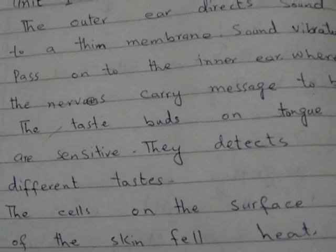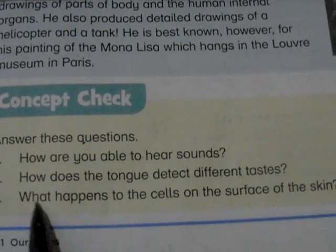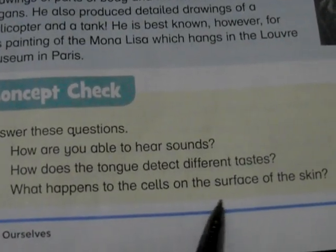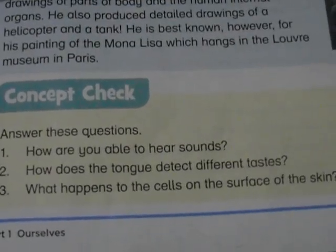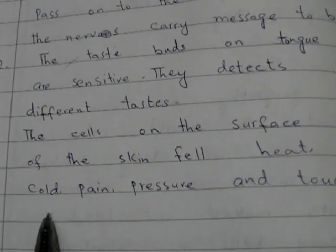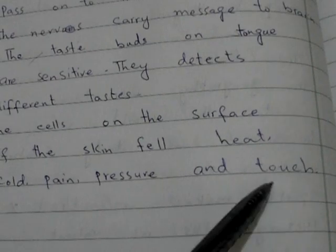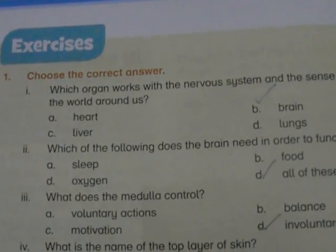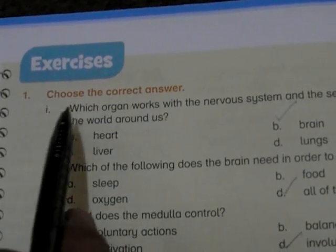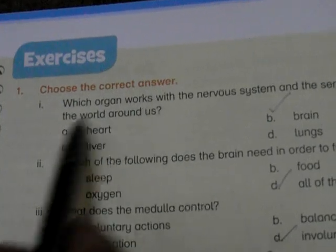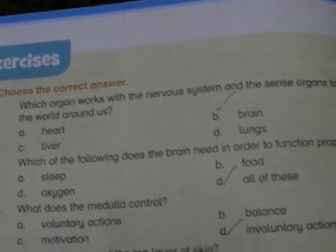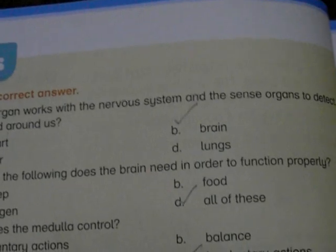Question three: What happens to the cells on the surface of the skin? The answer is: the cells on the surface of the skin feel heat, cold, pain, pressure, and touch. This is the answer of question number three.